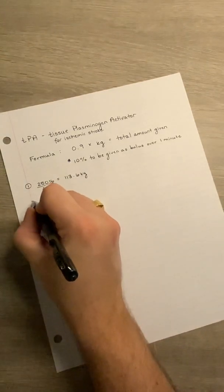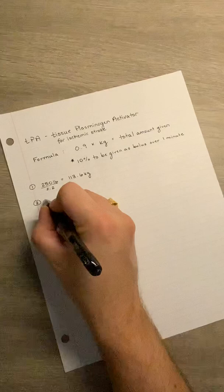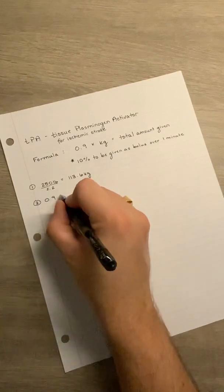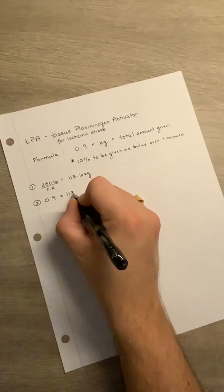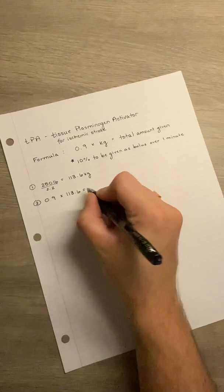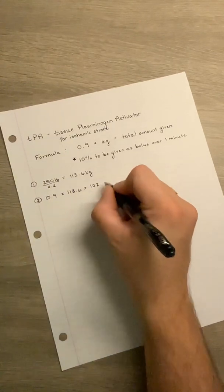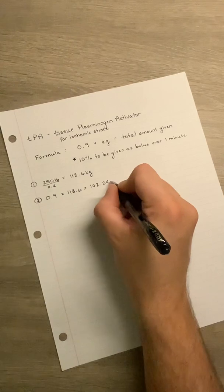Step number two is we're going to plug this into our formula. So we have 0.9 times 113.6, which is going to give us 102.24 milligrams.